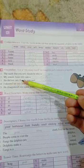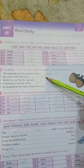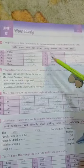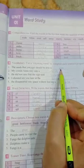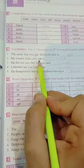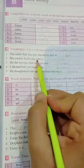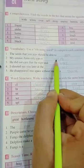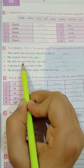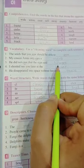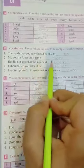So now we have to put the correct words here. My cousin Anna only eats meat. So grow and sow, they have the same sound, they both have the same sounds, so they are rhyming words. He did not care that the sign said beware. So we have to find out the words rhyming with care. So that is beware. The rhyming of care is beware.